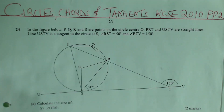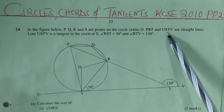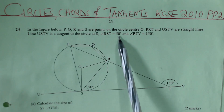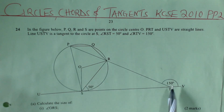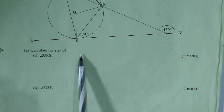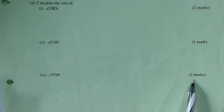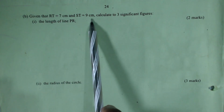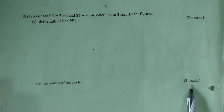Let's solve this question on circles, chords and tangents — KCC 2010 Paper 2, Question 24. In the figure, P, Q, R and S are points on the circle with centre O. PRT and USTV are straight lines. USTV is a tangent to the circle at S. Angle RST equals 50 degrees and angle RTV equals 150 degrees. Part a: calculate angle ORS (2 marks), angle USP (1 mark), and angle PQR (2 marks). Part b: given RT equals 7 cm and ST equals 9 cm, calculate the length of PR (2 marks) and the radius of the circle (3 marks).